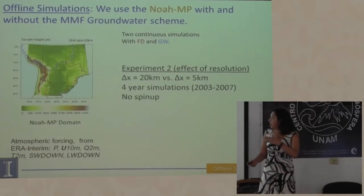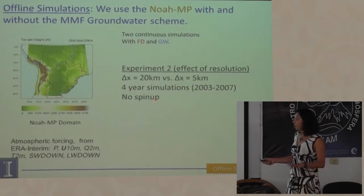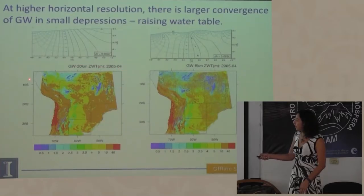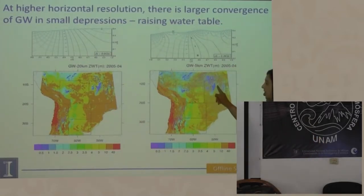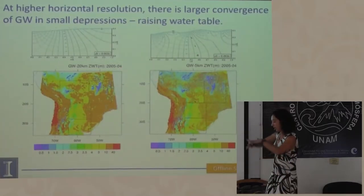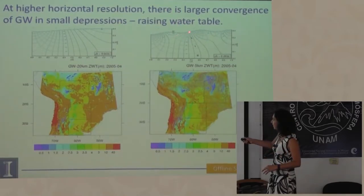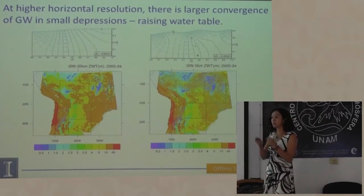Hicimos otro experimento comparando 20 kilómetros versus una resolución de 5 kilómetros, solo para una simulación de 4 años sin inicialización. Queríamos ver cómo afecta la resolución la simulación. A 5 kilómetros, toda la complejidad topográfica hace que se acumule el agua en los valles, generando flujos subterráneos laterales más complejos que los que se simulan a 20 kilómetros. Para las regiones con terreno complejo como el Amazonas, tienes que llegar a modelos de alta resolución para calcular esas interacciones. Sin embargo, para La Plata, una resolución de 20 kilómetros es razonable.